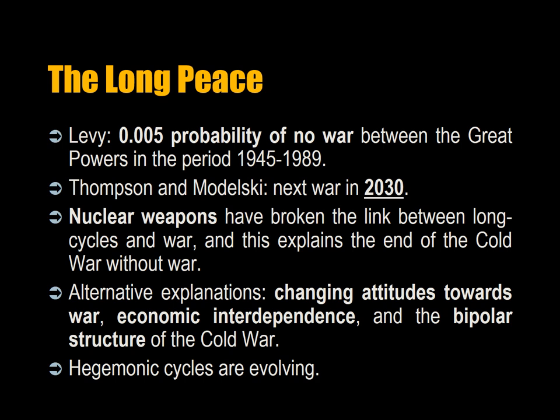Jack Levy has indicated that there was a 0.005 probability of no war between the great powers in the period of 1945 to 1989, based on the last five centuries of warfare. Thomas and Modelski have projected the next war to occur in 2030, based on their long cycle calculations of the fluctuations of naval power. Some long cycle theorists have proposed that nuclear weapons have broken the link between long cycles and war, and this explains the end of the Cold War without a general war between the capitalist West and the Soviet Union.